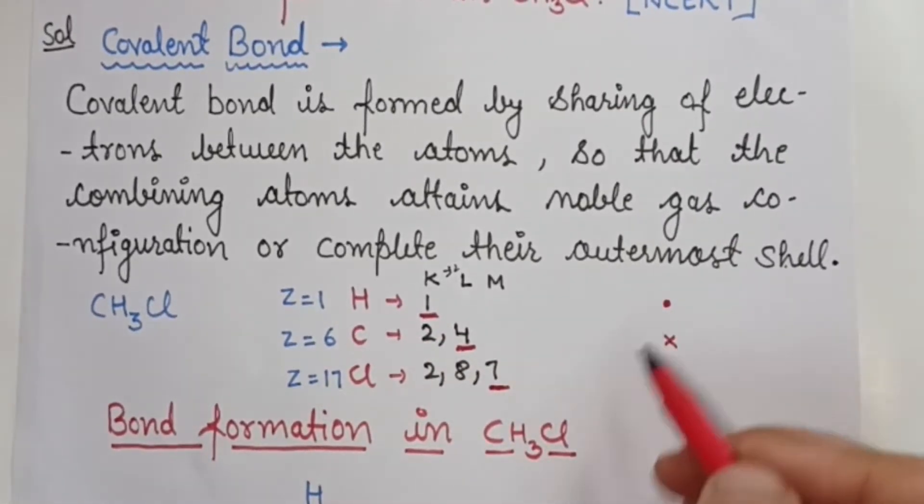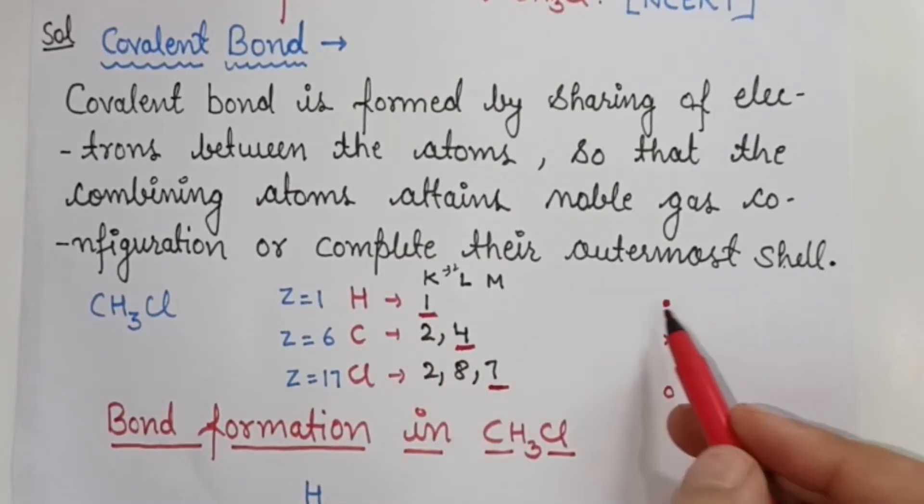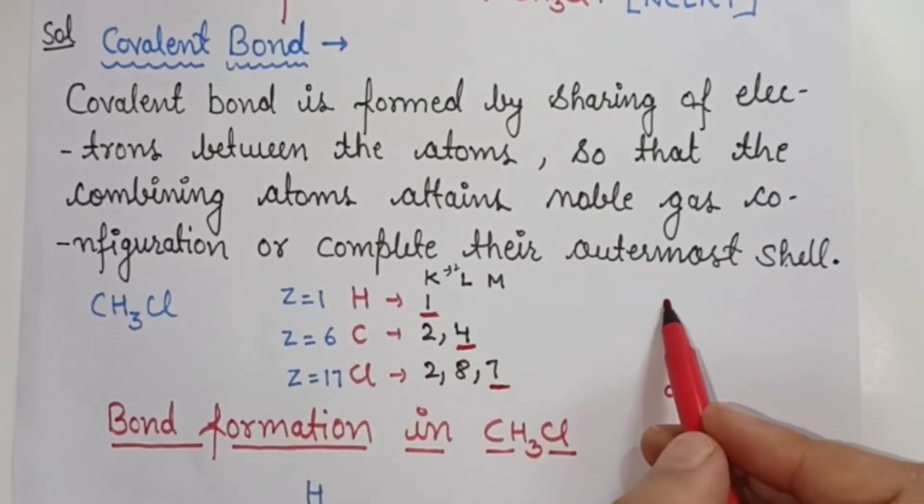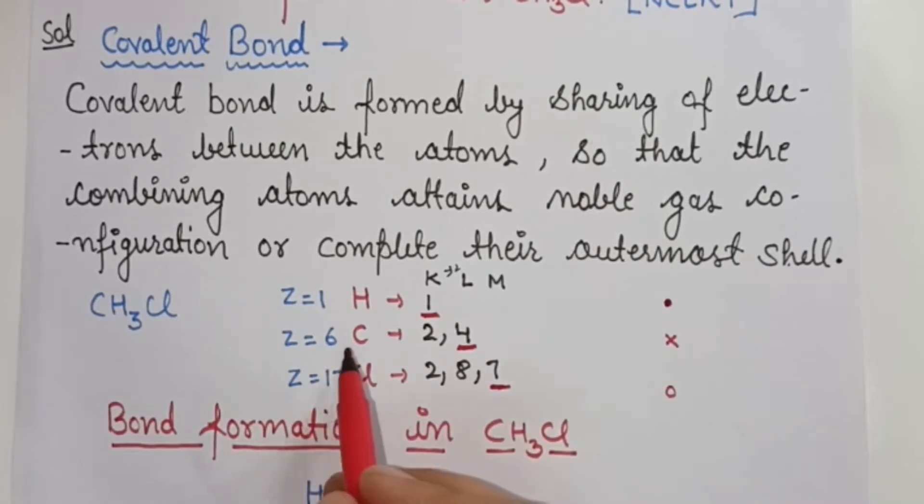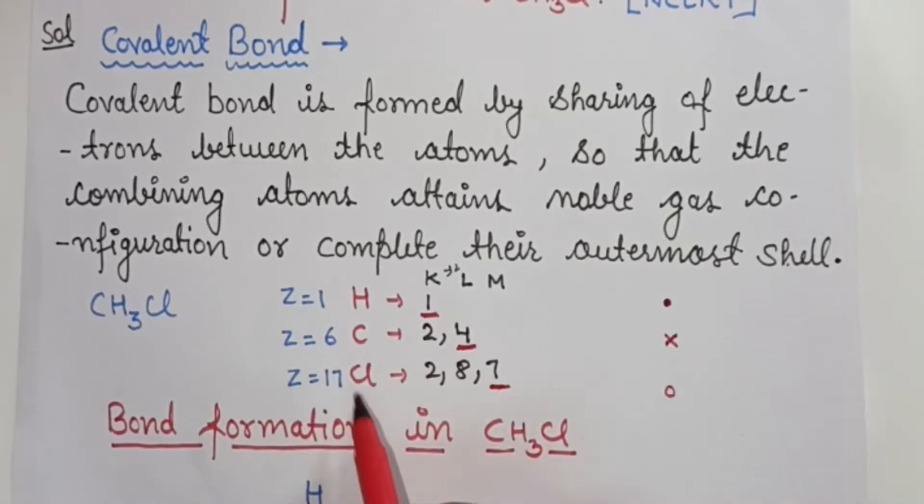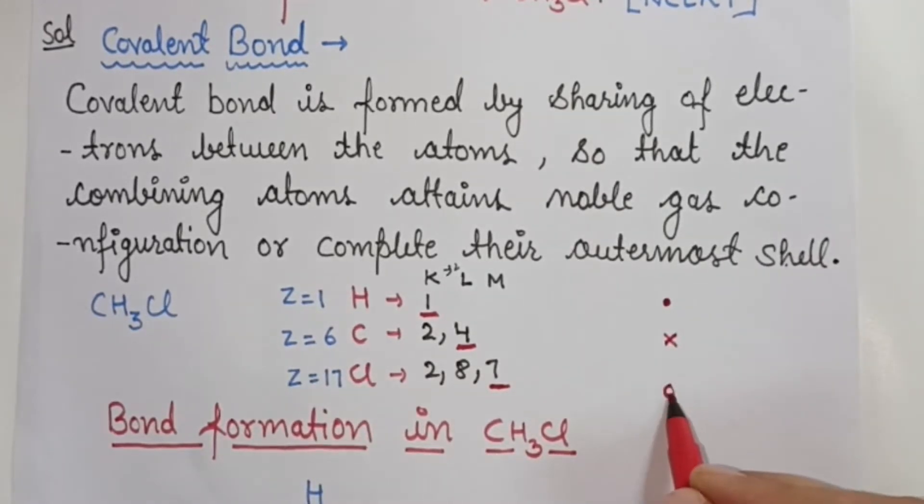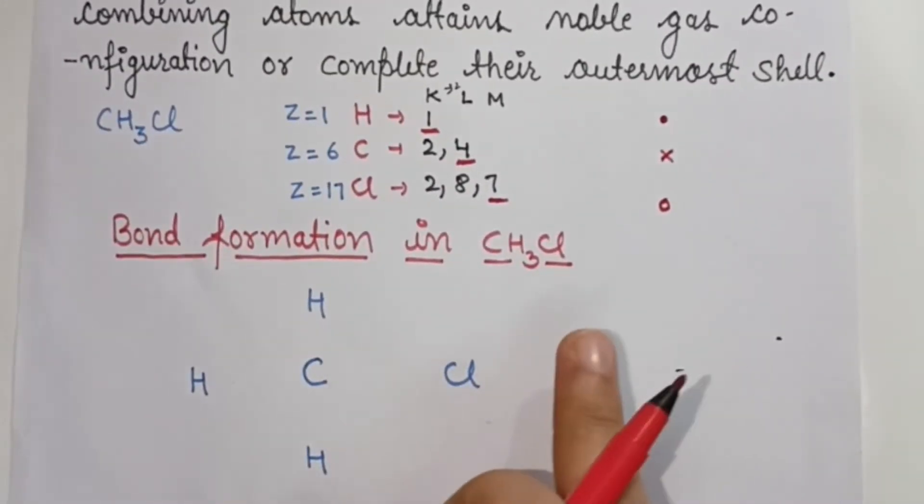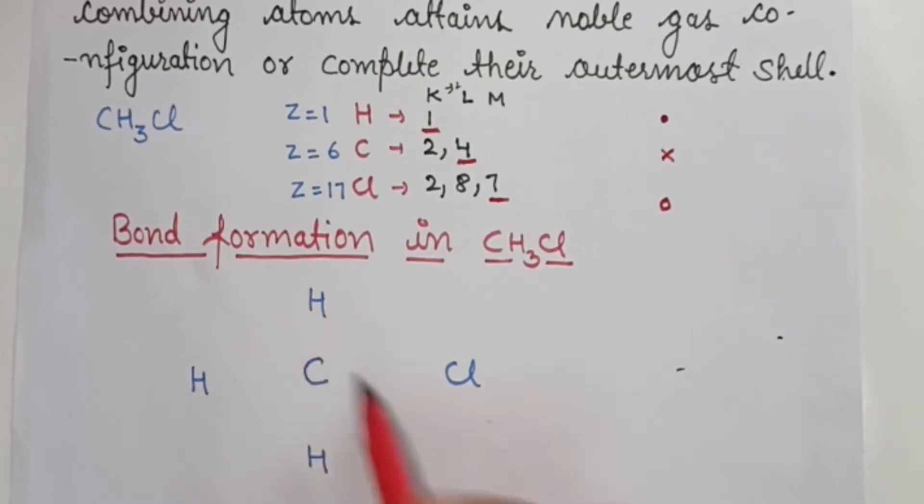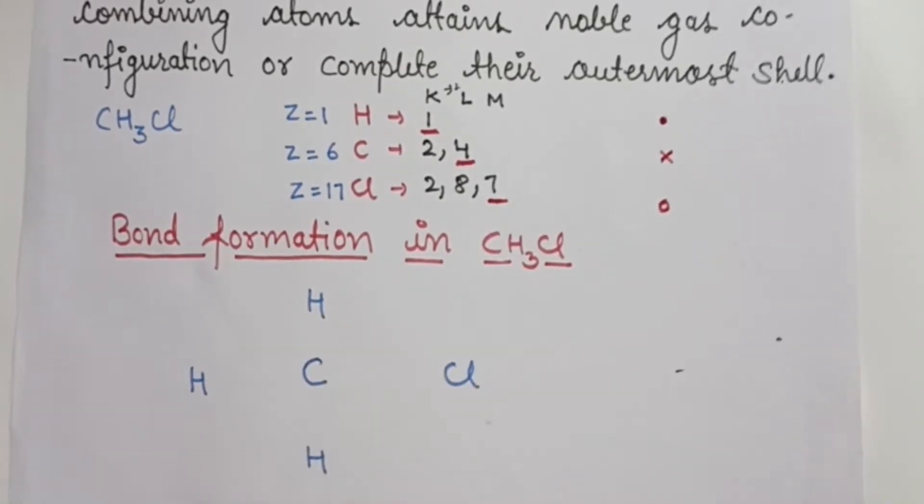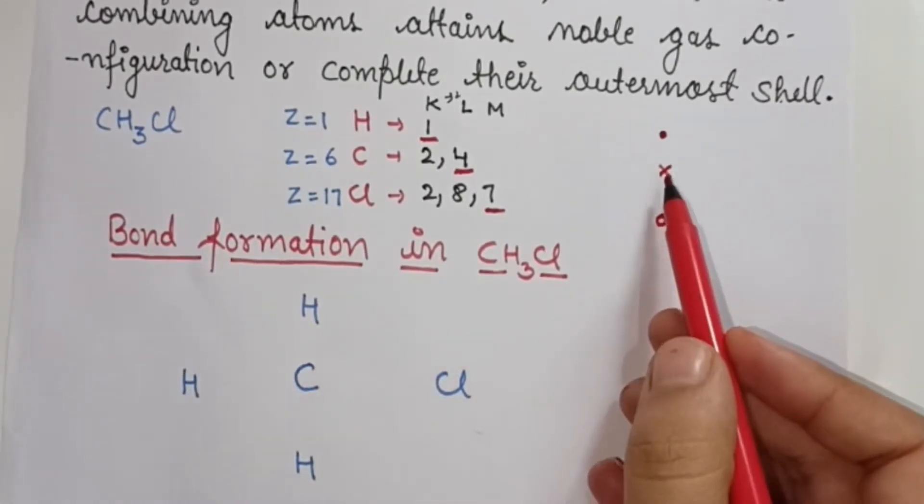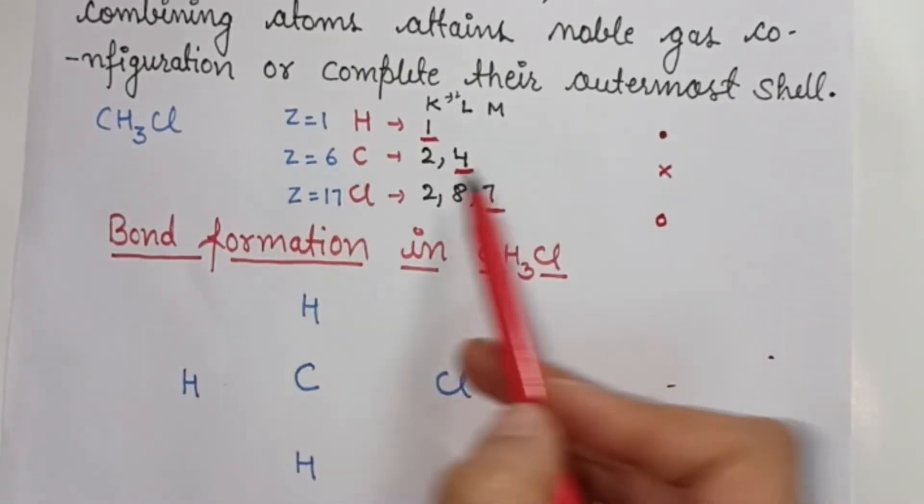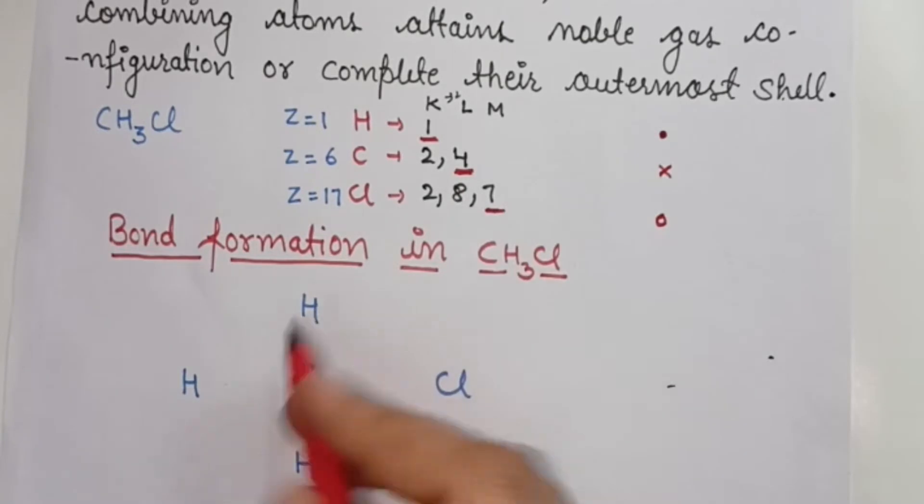Now we want to denote the valence electrons using Lewis dot notation. We represent them by crosses and dots. Carbon has 4 valence electrons, represented by crosses.